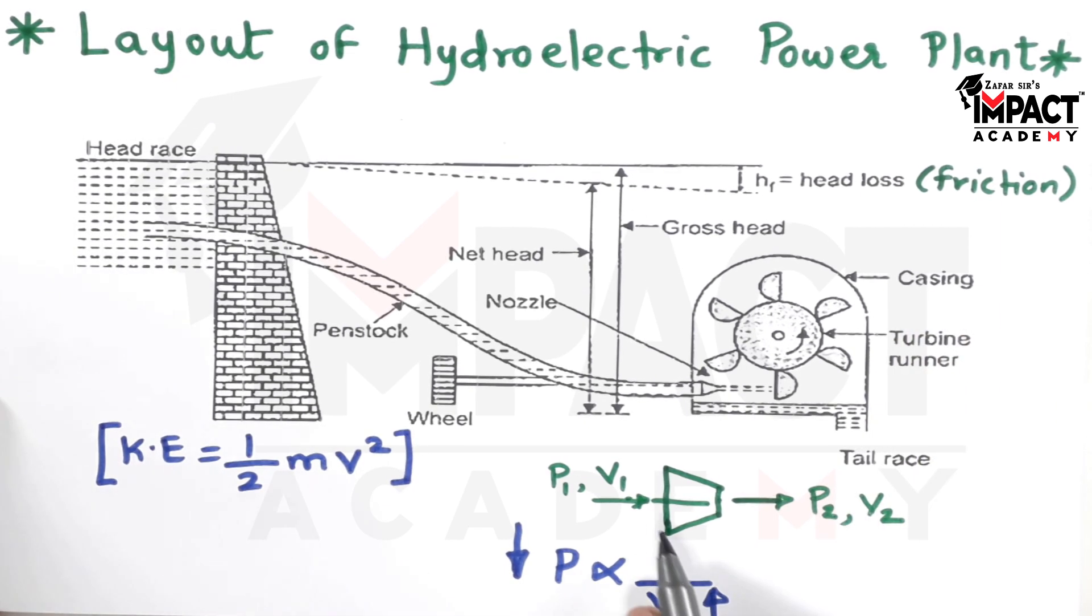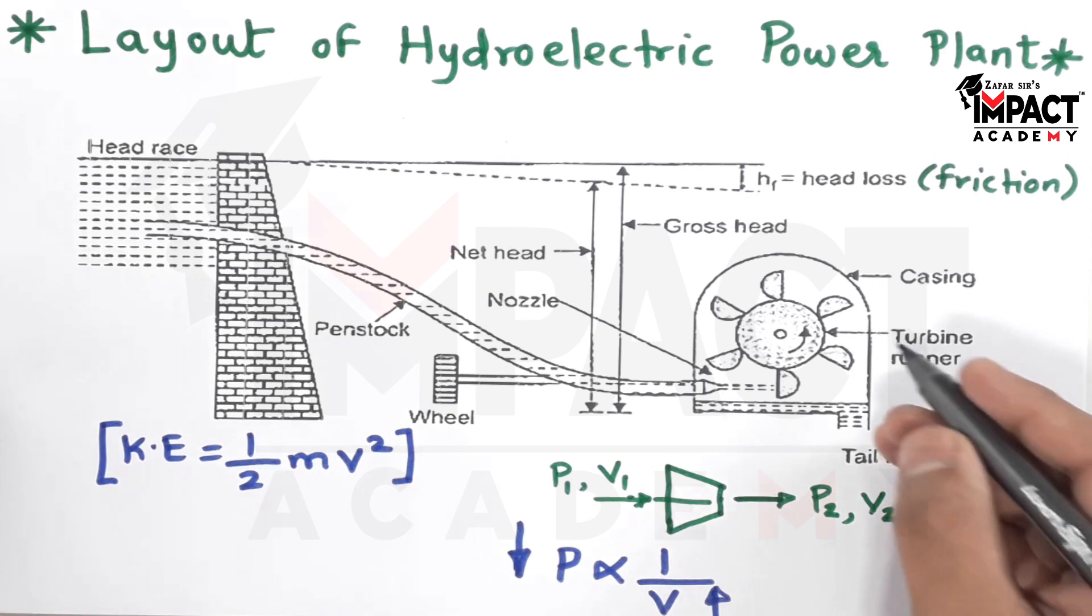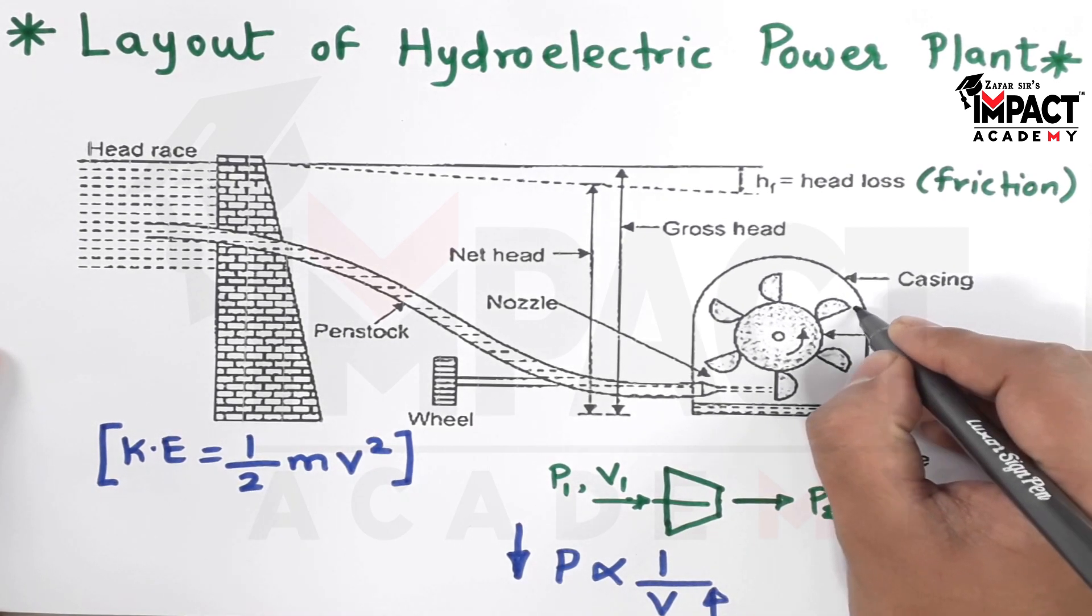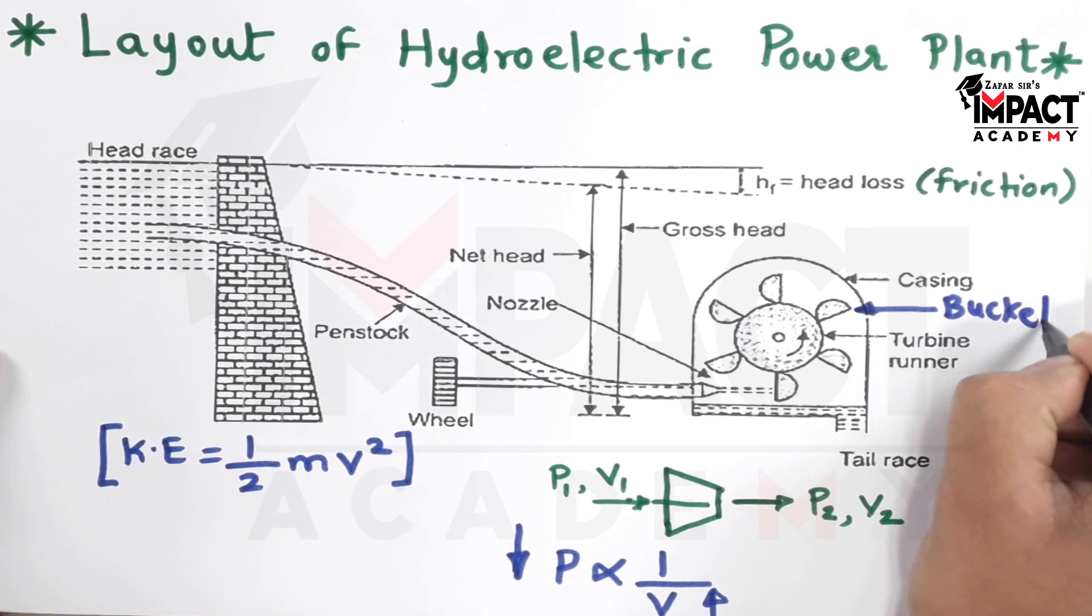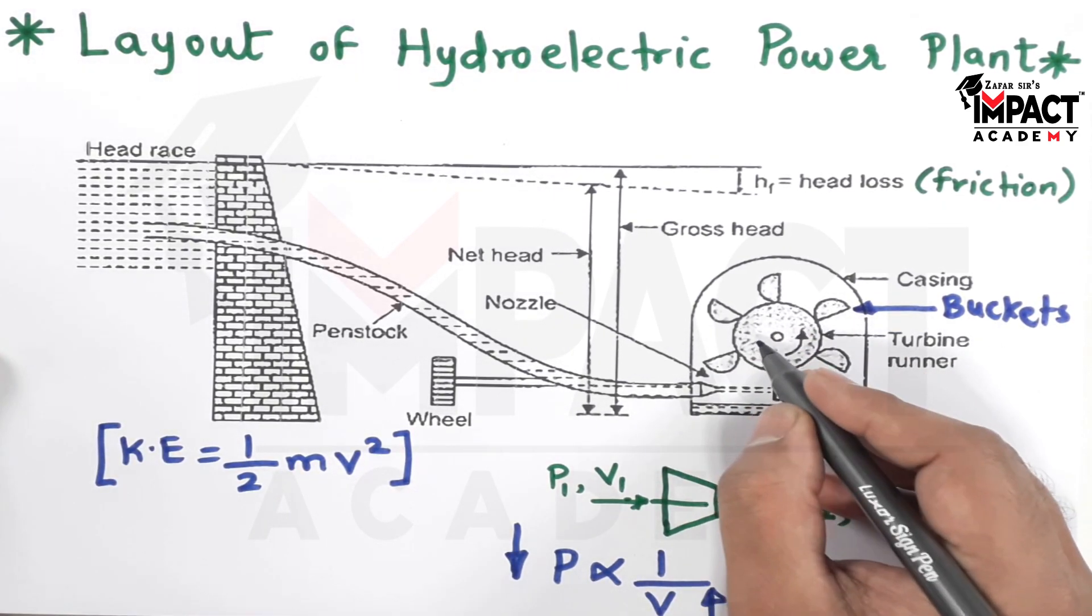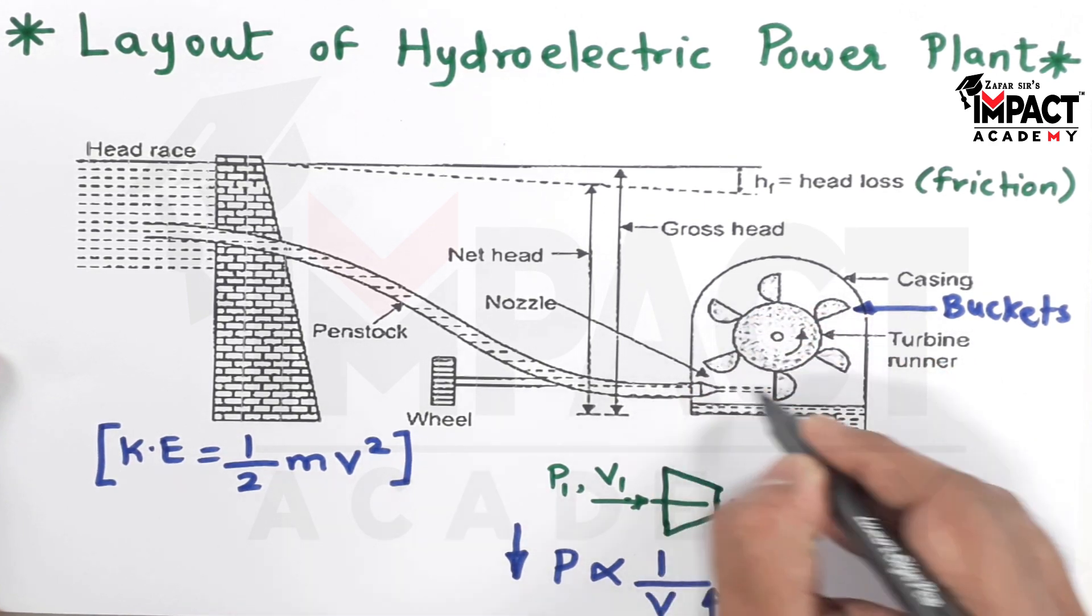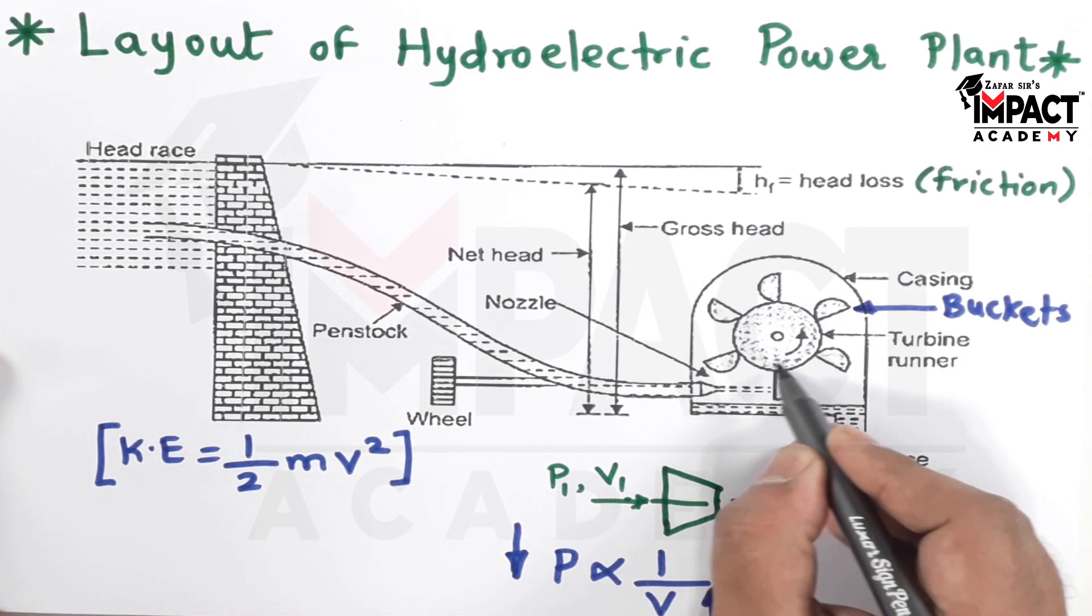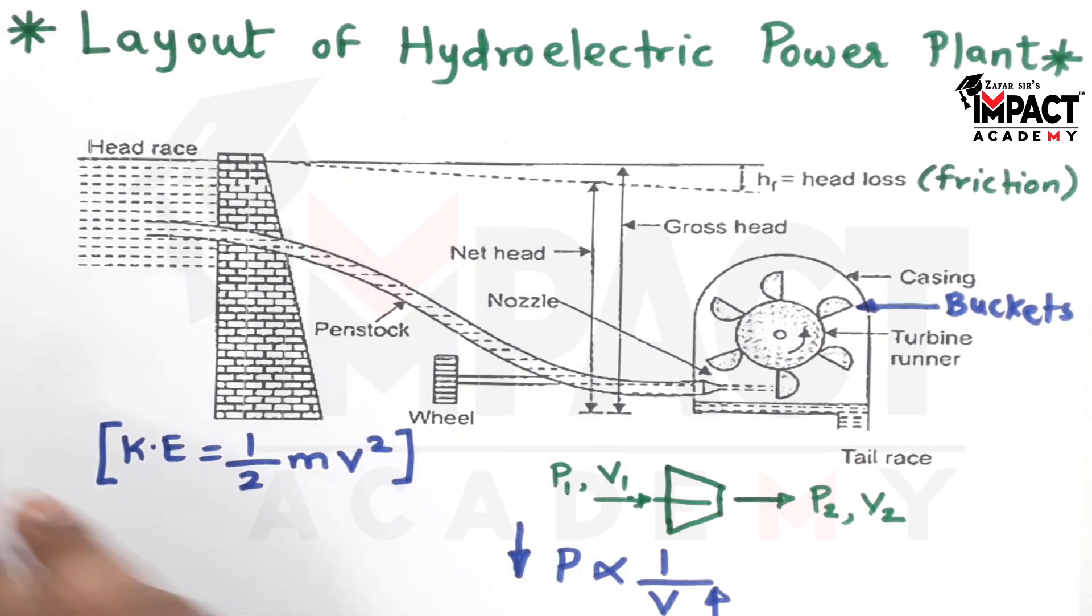So if the pressure energy loses or if it gets less, then the kinetic energy increases due to the increase in velocity, and that water would be striking these buckets, also called as the vanes, which are attached to this turbine runner. When the water strikes the buckets, it would start rotating. As we can see in this diagram, it is rotating in an anti-clockwise direction, and here at the center we have a shaft.